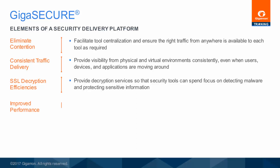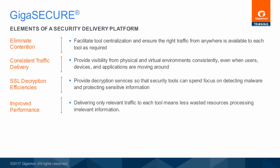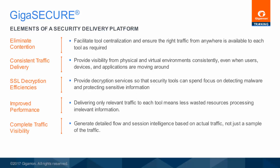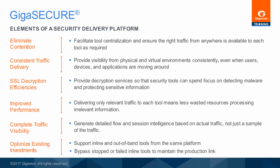Provide the ability to deliver just the relevant traffic streams to each security appliance — for example, an email security solution need not see YouTube traffic. Sending only relevant traffic allows security solutions to function more effectively and waste less bandwidth and resources processing irrelevant information. Generate detailed flow and session intelligence based on actual traffic, not just a sample of the traffic. Support inline and out-of-band network security deployments from the same platform, while providing the ability to load-share traffic to both inline and out-of-band security appliances. Also, provide the ability to bypass inline security appliances in the event of failure so as to keep the production link operational.